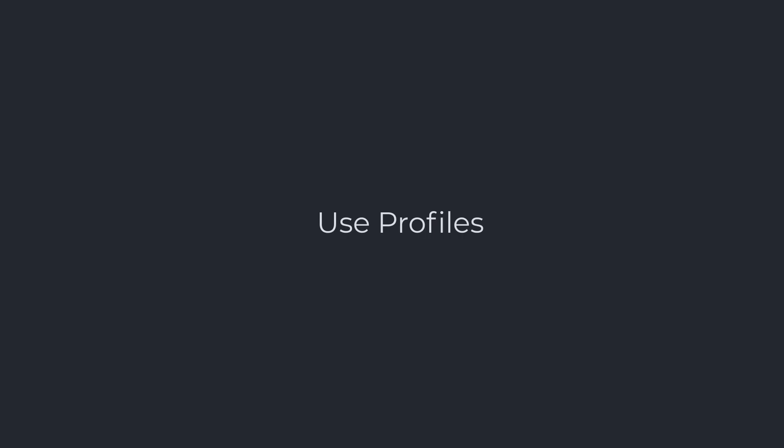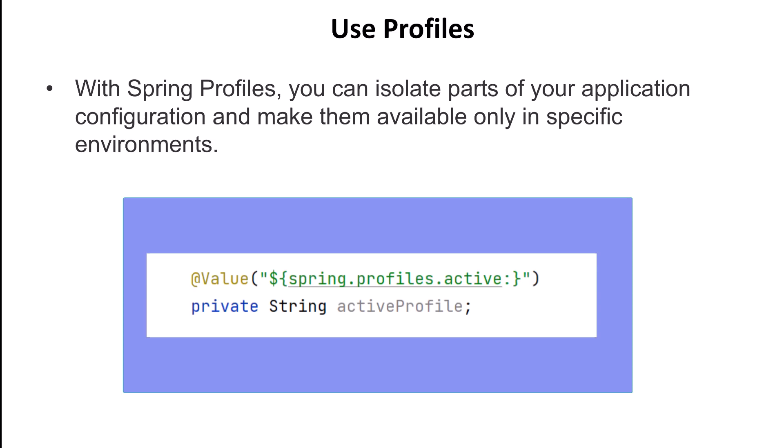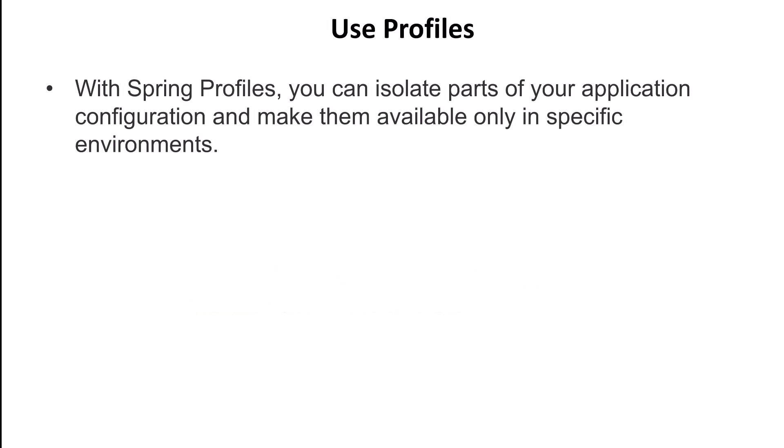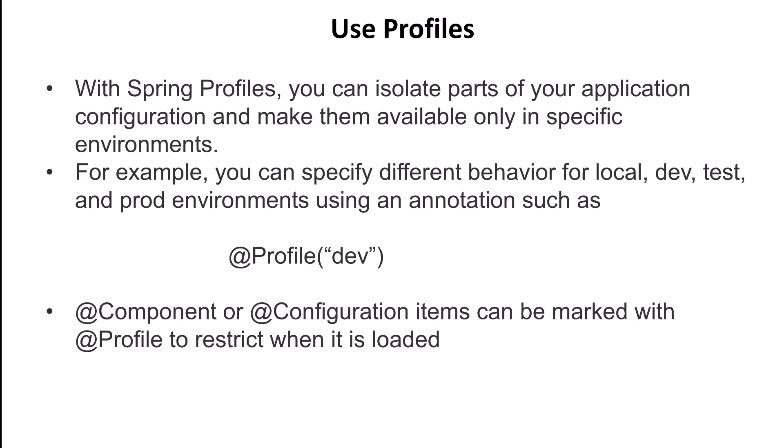Our next item is use profiles. Spring Boot allows you to define different profiles for your application and activate a specified profile using the spring.profiles.active property. With Spring Profiles, you can isolate parts of your application configuration and make them available only in certain environments — useful for running different configurations for development, staging, or production. Using an annotation like @Profile, you can specify different application behavior for local, dev, test, performance, and production environments. Component or configuration annotations can be marked with profile annotations to restrict when they're loaded.